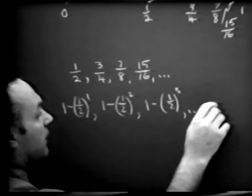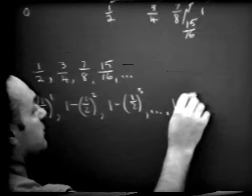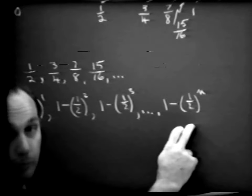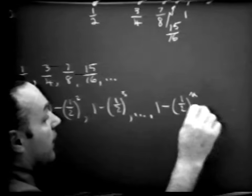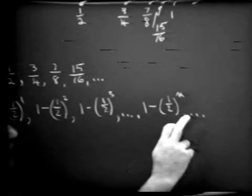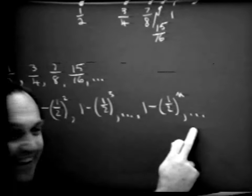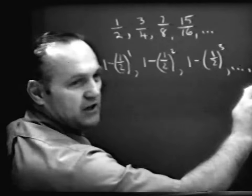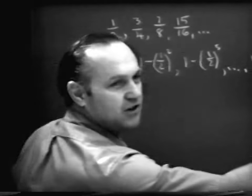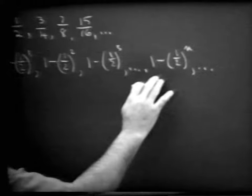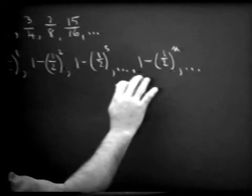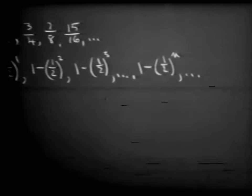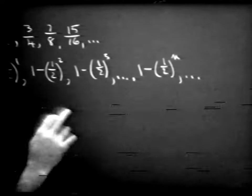One minus one-half cubed would be the third term. And let's continue this on out to some term of one minus one-half to the nth power — that would be the nth term. Let me continue this sequence on forever. As the sequence goes on forever, what can we say about the number that this is approaching? It's getting closer and closer to one.